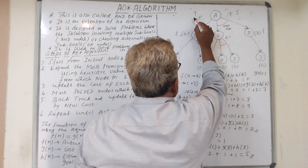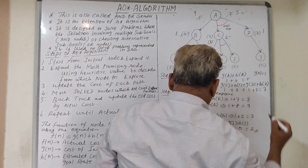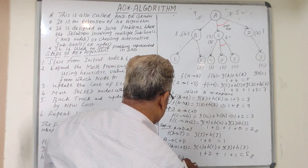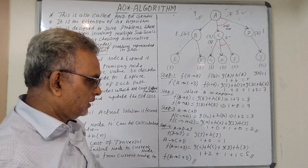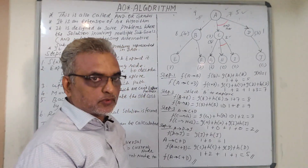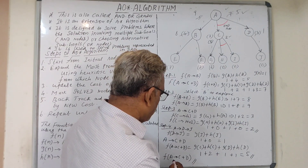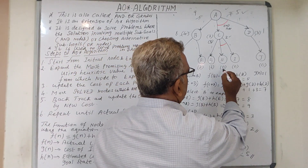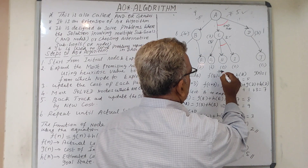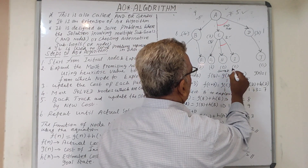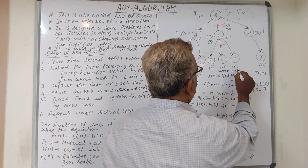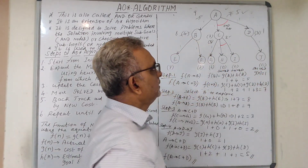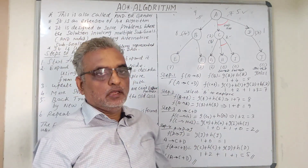Comparing both sides, A to B is 9 and A to C+D is 5. The minimum is 5, so we select path A to C+D as our solution. The cost of the path is 5. These are the terminal nodes where we reached heuristic value zero, so these nodes must be labeled as solved — we need not explore them further. I hope you understood. Keep watching, thank you.